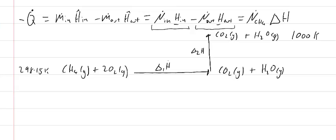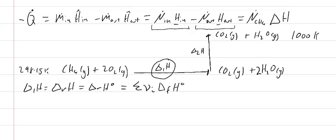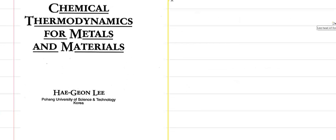My first step here, delta-1H, is equal to the heat of reaction in going from methane and oxygen to CO2 and water. I've got my stoichiometric coefficient here, which is equal to the standard heat of reaction due to the ideal gas assumption. We'll remember that that's equal to the sum of the stoichiometric coefficient times the standard heat of formation for each of the components. I'm just going to go to the data from the text by Hagan Lee.